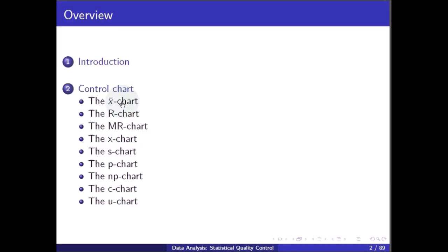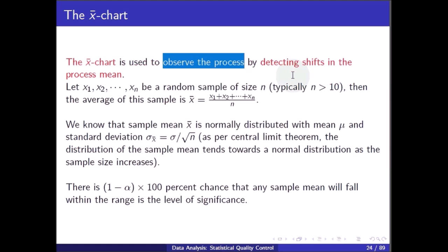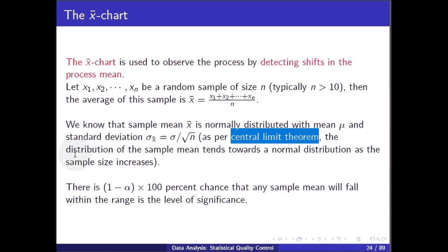In this video we will talk about X-bar chart and R chart. The X-bar chart is used to observe the process by detecting shifts in the process mean. Let x1, x2 to xn be a random sample of size n, typically greater than 10. The average of this sample is x-bar equal to (x1 + x2 + ... + xn) / n. The sample mean x-bar is normally distributed with mean mu and standard deviation sigma_x-bar = sigma / sqrt(n), as per the central limit theorem. There is a (1 - alpha) * 100% chance that any sample mean will fall within a defined range.